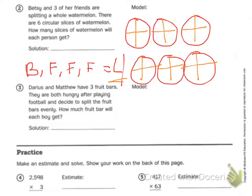How many slices of watermelon will each person get? So Ms. DeBoer is going to take the blue and she's going to shade in the blue on each one. So one, two, three, four, five, six. So if I'm one of Betsy's friends, I'm going to get six slices out of how many in one whole? There are four.